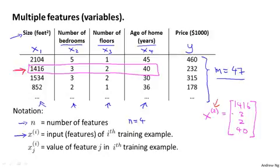With this notation, x superscript 2 is a four-dimensional vector. In fact, more generally, this is an n-dimensional feature vector. With this notation, x superscript 2 is now a vector, and so I'm going to use x superscript i subscript j to denote the value of feature number j in the i-th training example. So concretely, x superscript 2 subscript 3 will refer to feature number 3 in this vector, which is equal to 2.